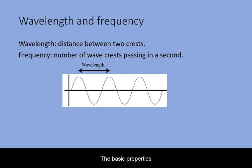The basic properties of a wave are its wavelength, its frequency, and its speed.